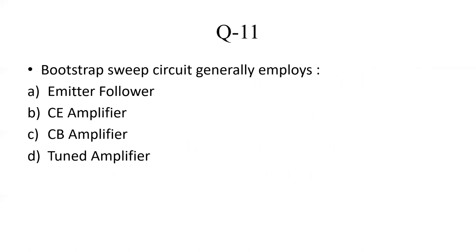The next question: a bootstrap sweep circuit generally employs — Option A: emitter follower; Option B: CE amplifier; Option C: CB amplifier; Option D: tuned amplifier. In a bootstrap sweep circuit, a common collector amplifier is used, and the other name for common collector is emitter follower. So in a bootstrap sweep circuit we use an emitter follower. The correct answer is Option A: emitter follower.